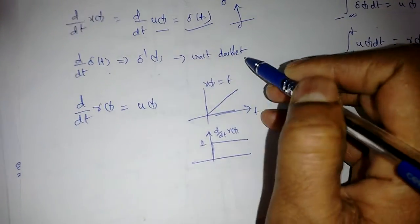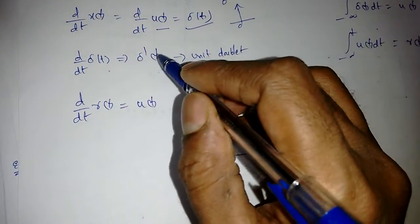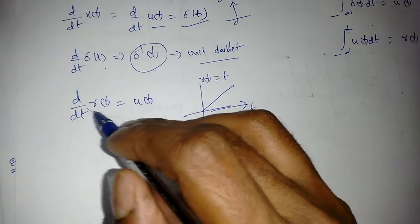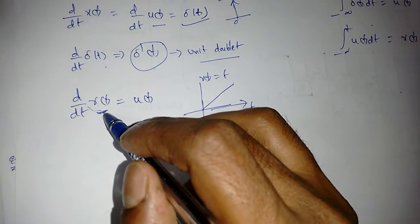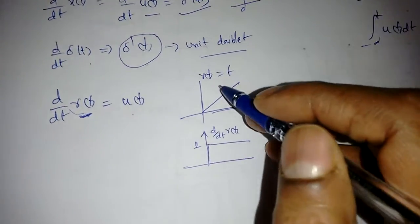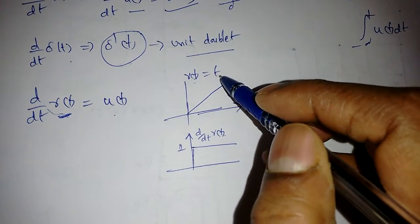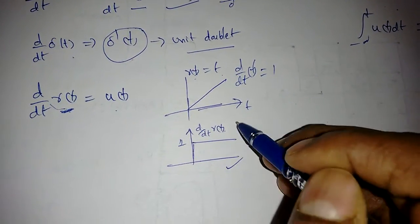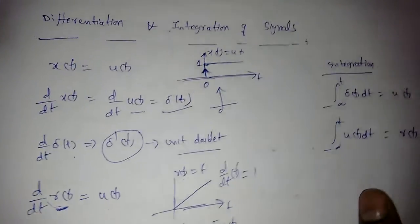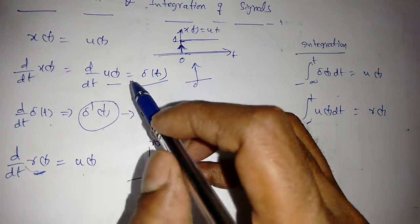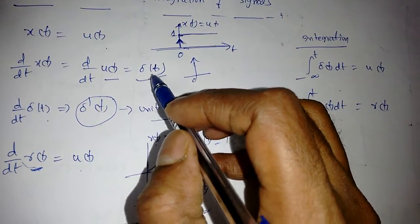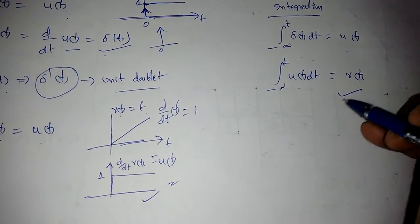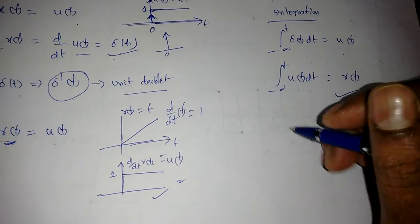If we differentiate delta(t) we get the unit doublet delta'(t). The unit ramp signal r(t) equals t, and d/dt of t equals 1, which is the unit step signal. So the relationships are: d/dt of r(t) = u(t), d/dt of u(t) = delta(t), and in reverse: integrating delta(t) gives u(t), and integrating u(t) gives r(t).